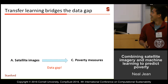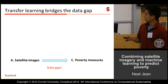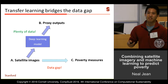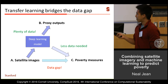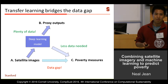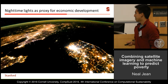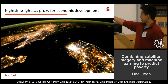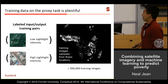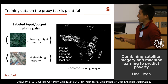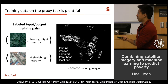The gap we're closing is that we don't have enough poverty measures to train the model directly. Instead, we choose a proxy task where we do have lots of data, train a deep learning model from satellite images to that proxy outcome, and then use what we've learned to predict the poverty measures we care about. The proxy task we pick is nighttime light intensity. This data is available everywhere and has been shown to be a good proxy for economic development. For example, South Korea looks like a bright island, while North Korea is a dark spot.